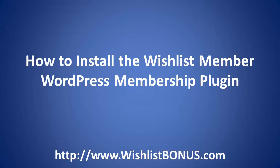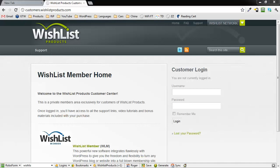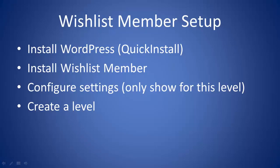So let's get right to it. WishList Member is a plugin for WordPress, which is a blogging platform and also a content management system — it's free and open source. I'm going to show you two things: how to install WordPress itself using a program called QuickInstall offered by a host called HostGator, and how to install WishList Member itself, configure a couple of settings, and create a membership level.